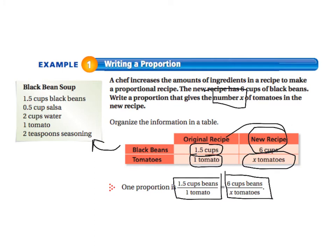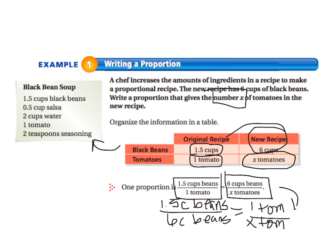Another way to write the proportion is comparing the beans, 1.5 cups of beans to 6 cups of beans, and 1 tomato to x tomatoes. So these are both perfectly acceptable proportions.